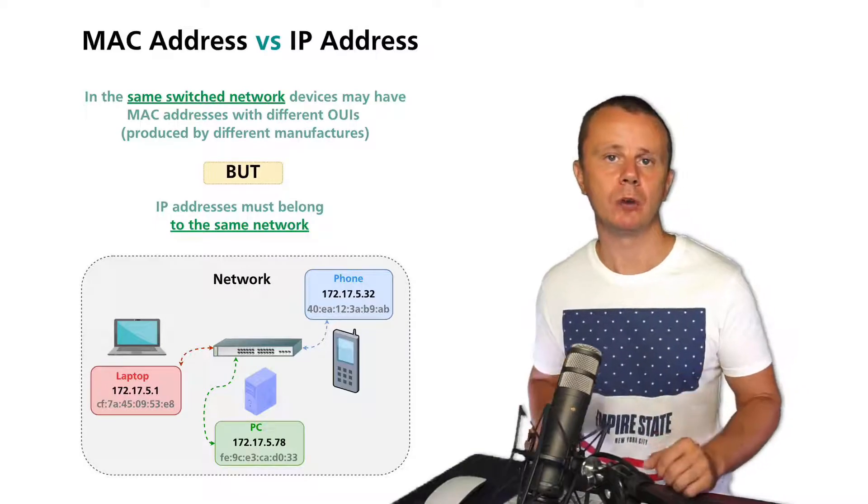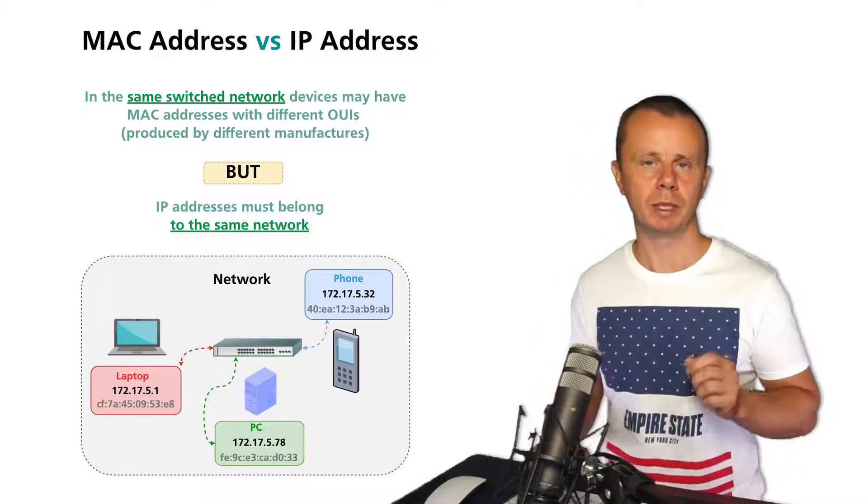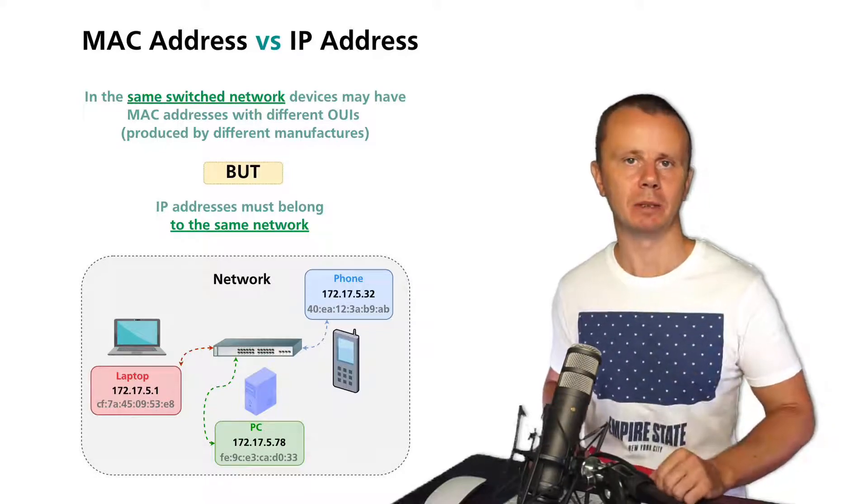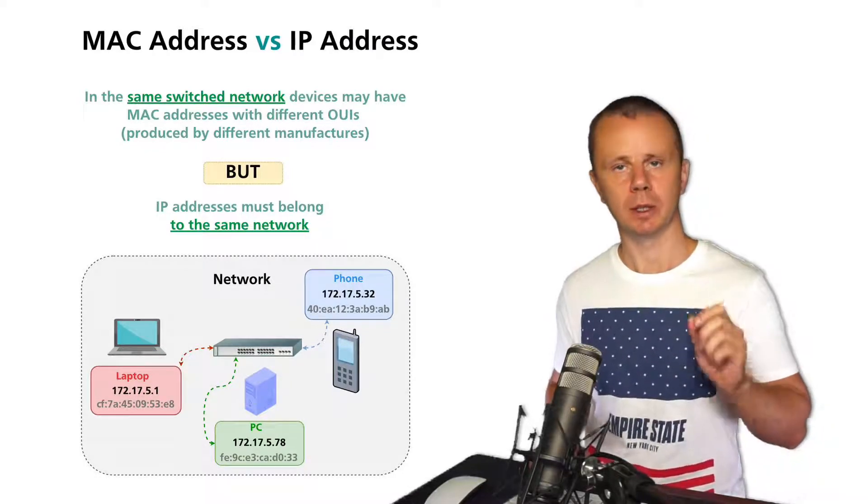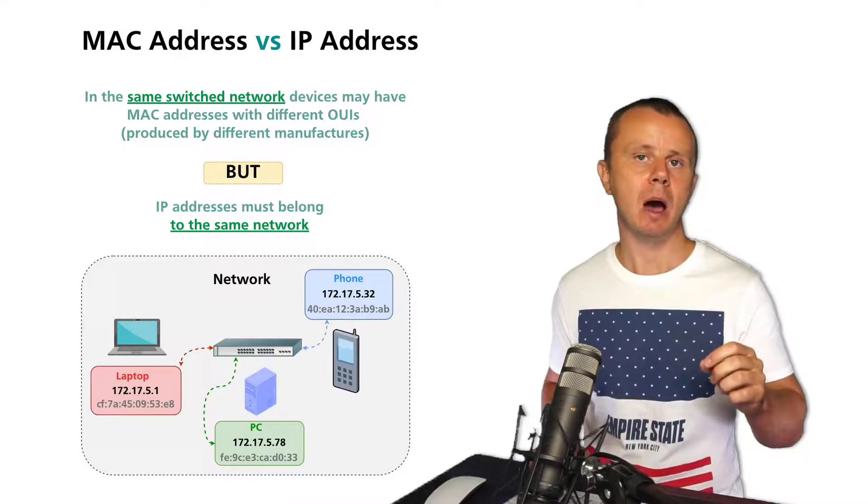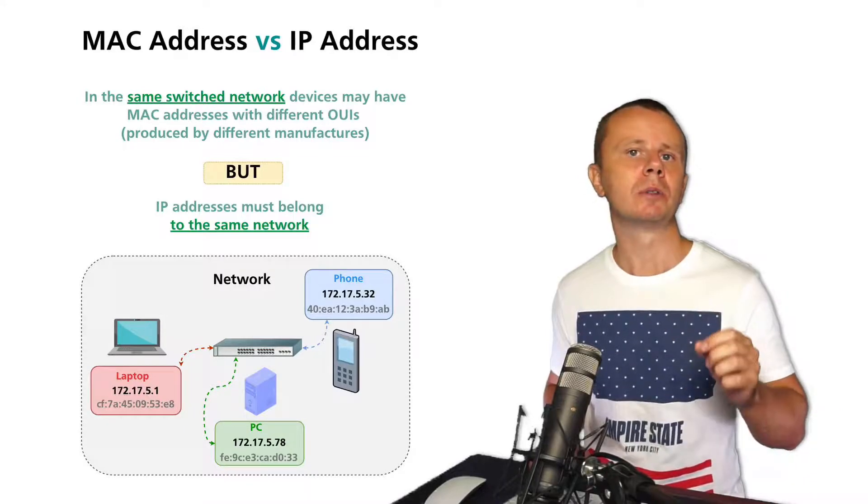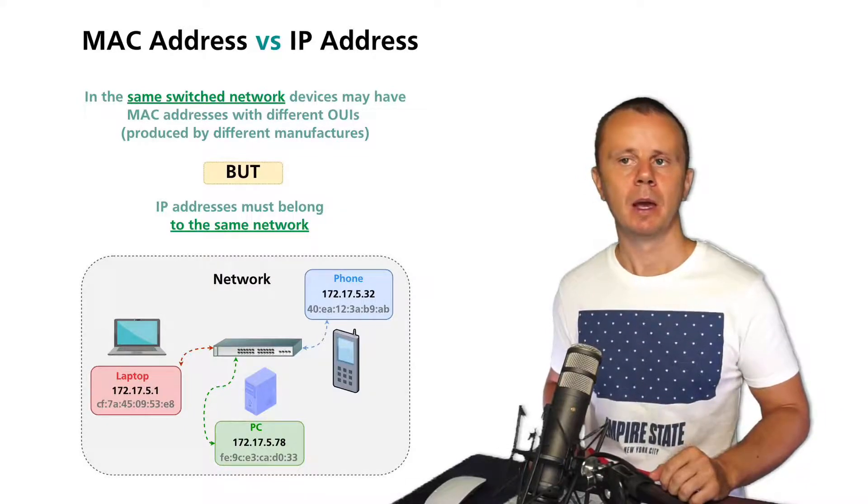In short, IP version 4 address consists of 32 bits and usually it is represented using four different decimal numbers separated using dots. The smallest possible decimal number on every place is zero and the maximum number is 255.